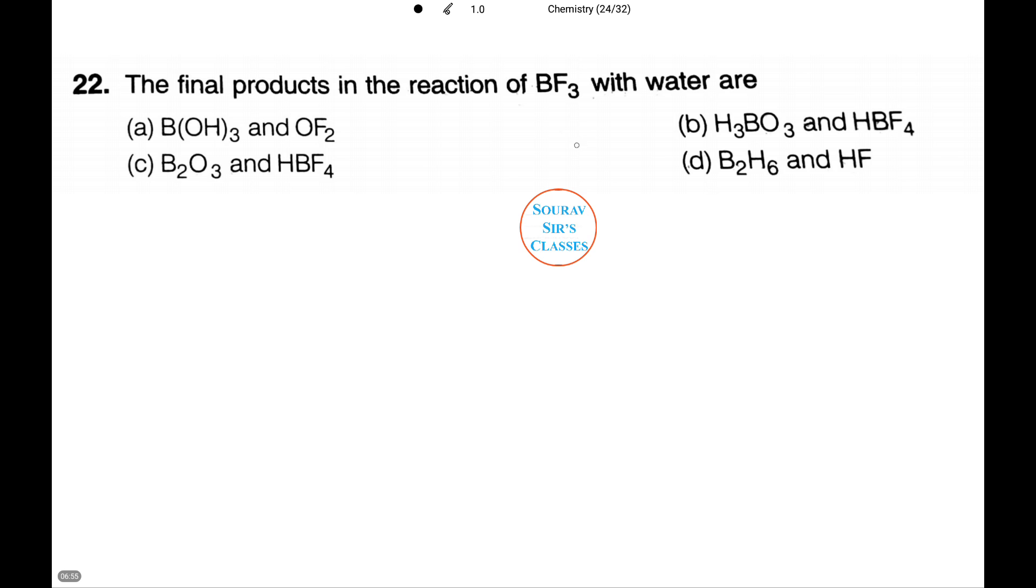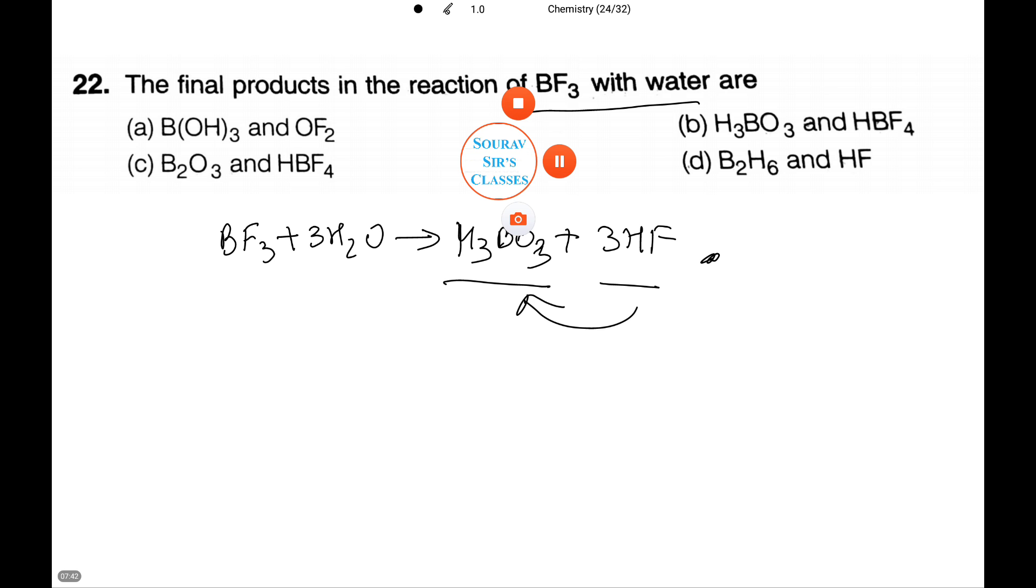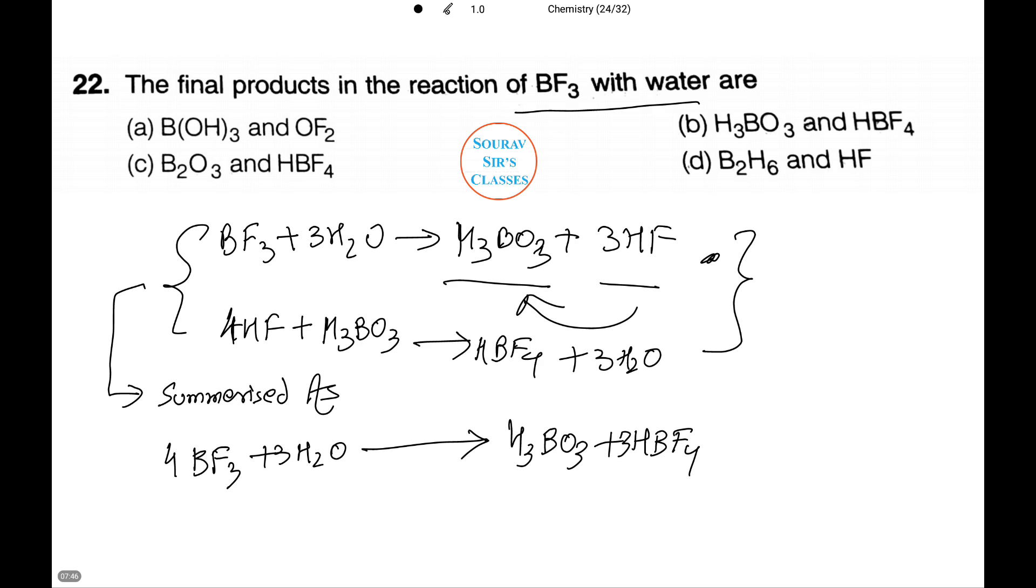Now let us do a question on chemical reactions. What will be the final products in reaction of BF3 with water, i.e., boron trifluoride? BF3 plus 3H2O gives us H3BO3 plus 3HF, that is boric acid and hydrogen fluoride. The HF formed must react with this boric acid. 4HF plus H3BO3 gives us HBF4 plus 3H2O. The following two reactions can be summarized as shown below. Thus the answer is option B.